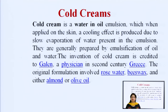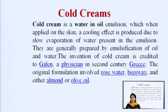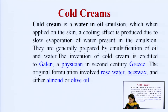The invention of cold cream was done by Galen, a physician in the second century in Greece. The original formulation of cold cream was prepared with three ingredients: rose water, beeswax, and almond or olive oil. Rose water acts as the water phase, almond and olive oil act as the oil phase, and beeswax acts as the emulsifying agent. Using these three ingredients, the physician Galen generated a formulation known as cold cream.